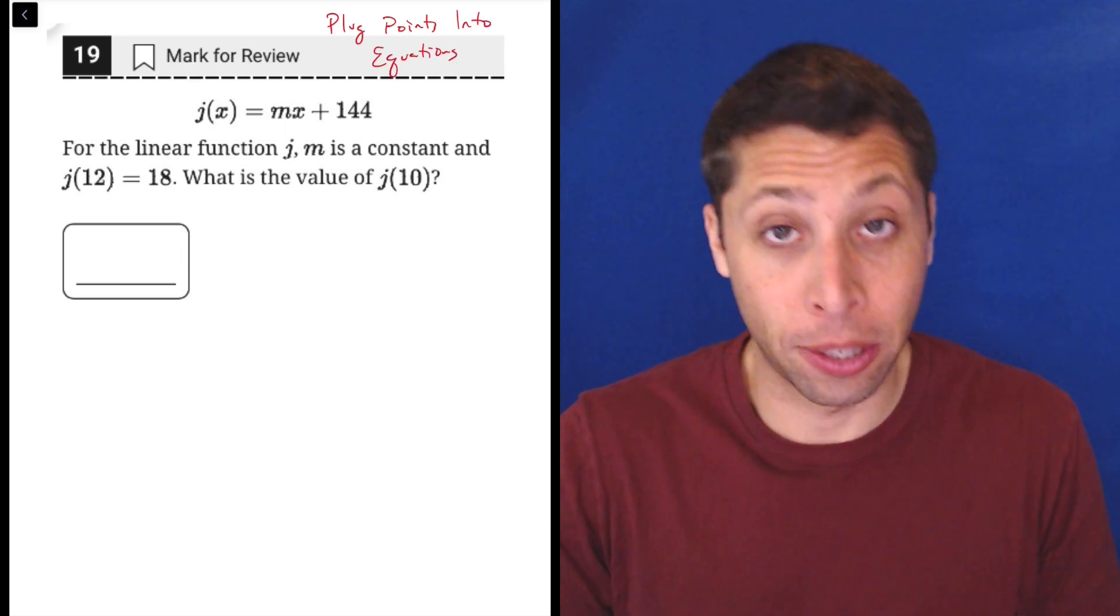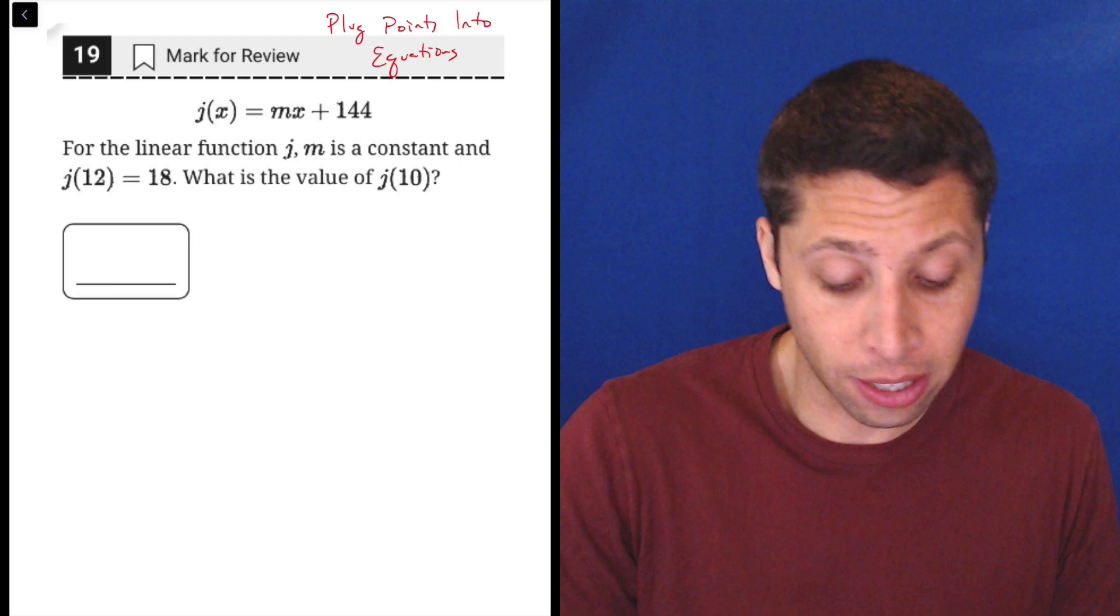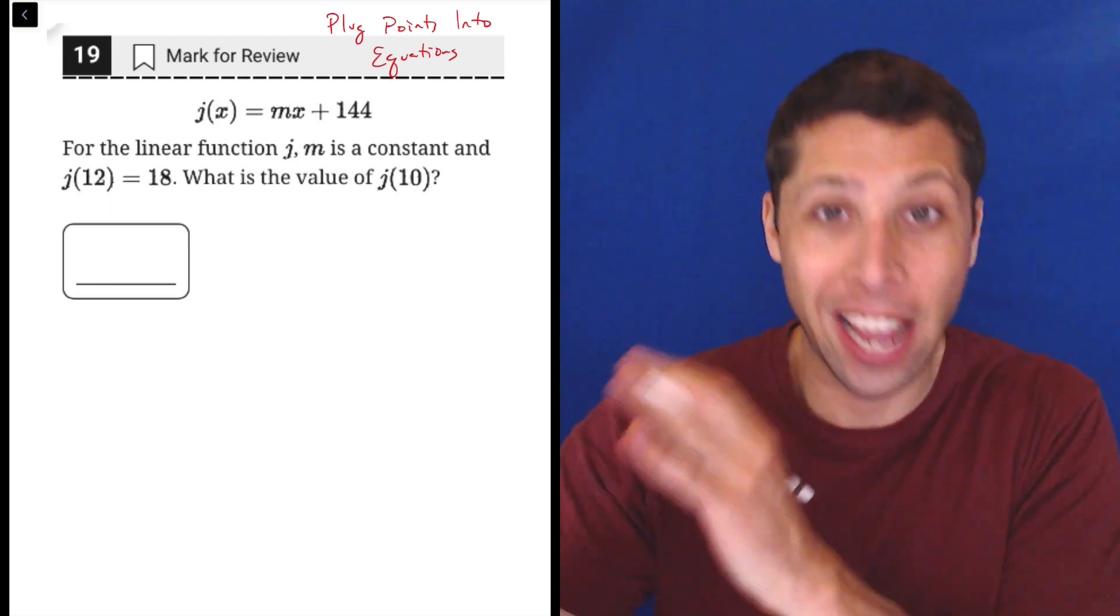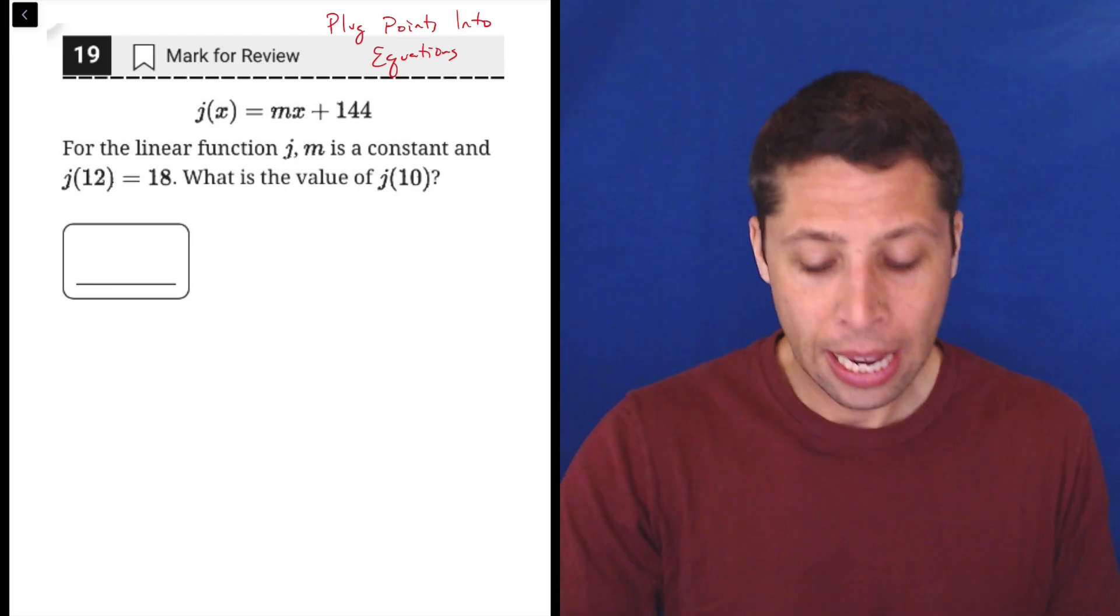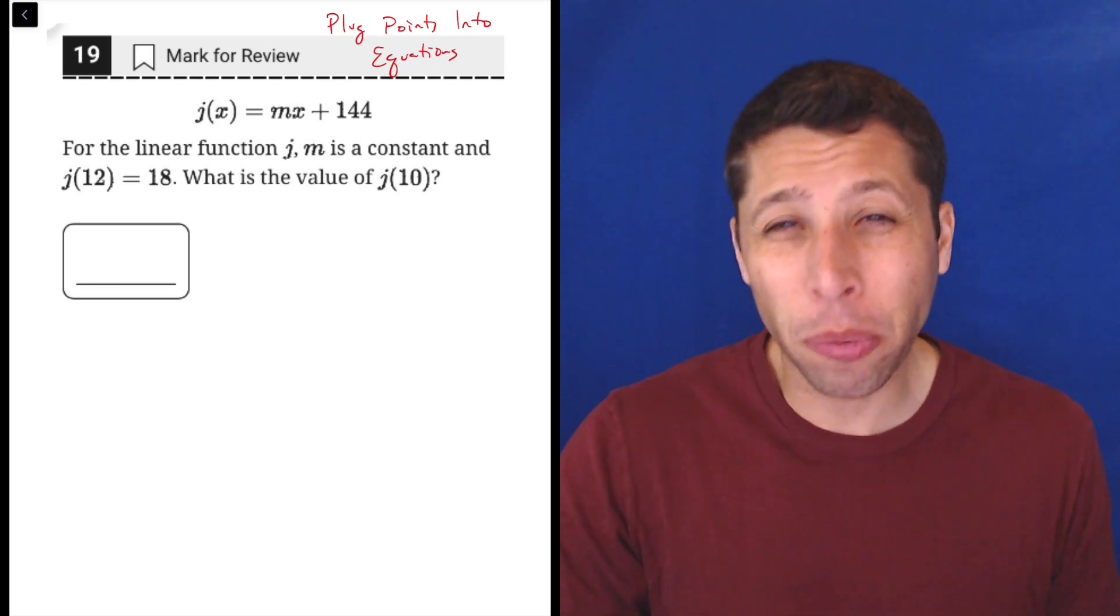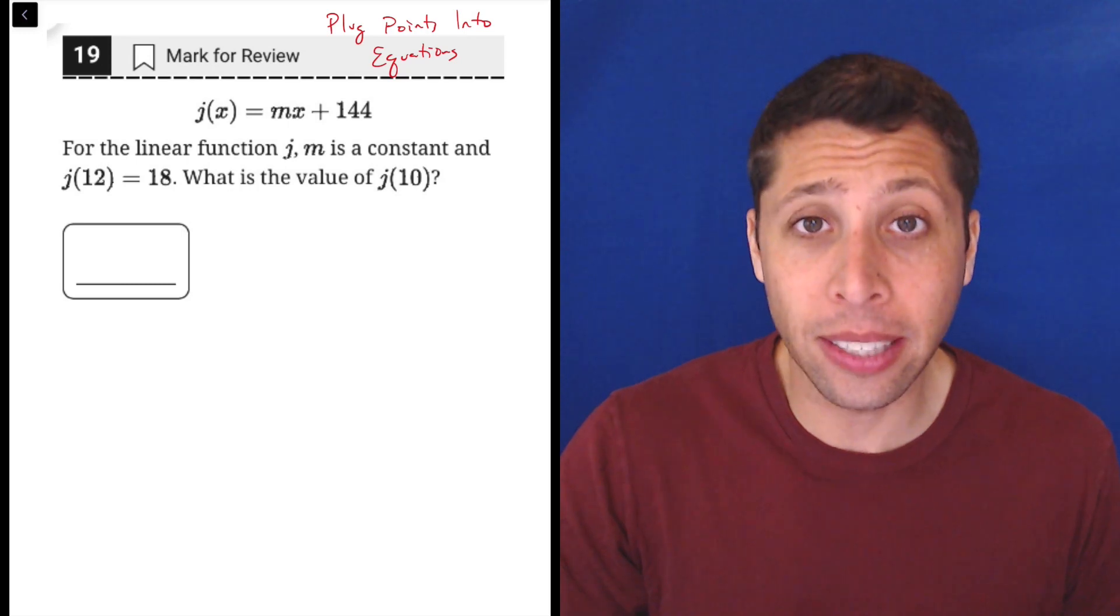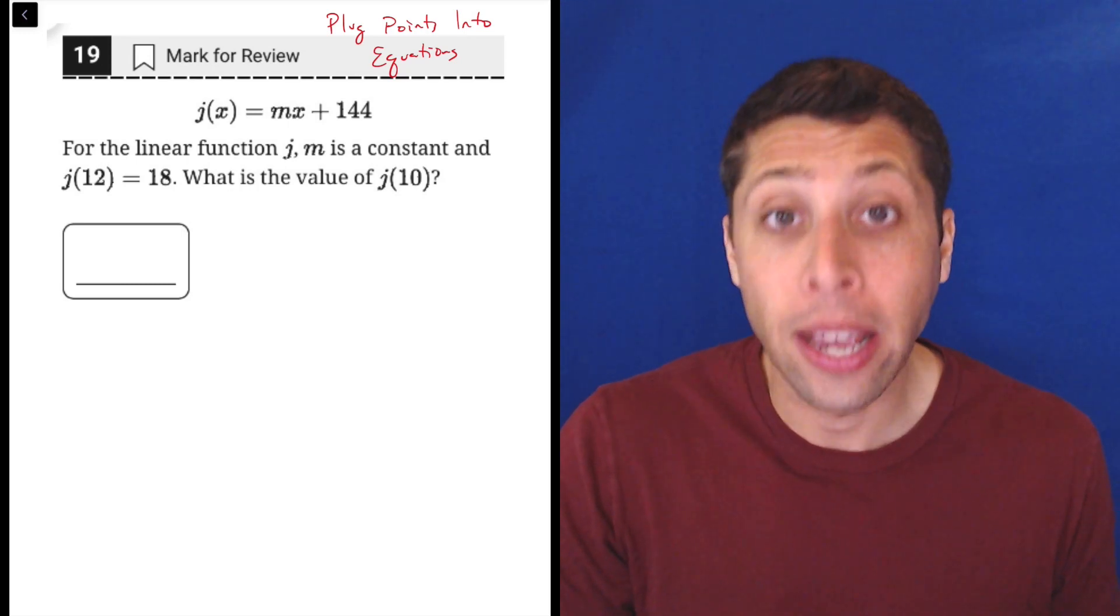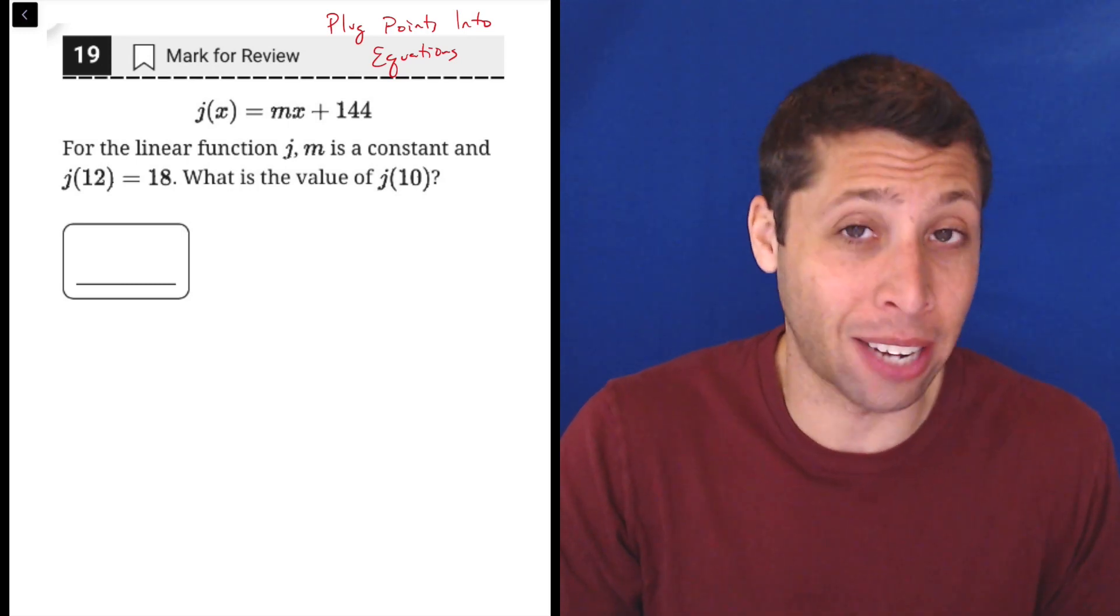We clearly have an equation, right, with j(x) equals mx plus 144. It's standing in the center of the question for us, but it might be less clear that we have points, and that's because we are in function notation, which you might not be familiar with yet. Basically it's a way of talking about x and y without using x and y.